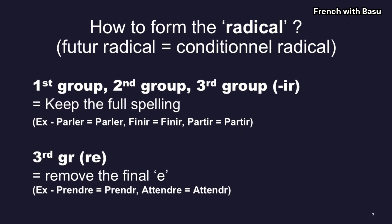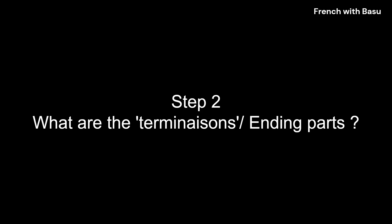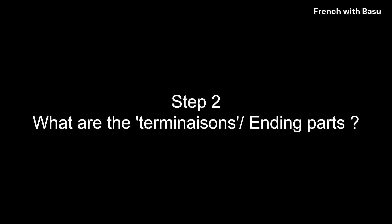Step 2: let's learn the terminaison, or ending parts, of le conditionnel présent. These are exactly the same as l'imparfait endings: -ais, -ais, -ait, -ait, -ions, -iez, -aient. You can use these terminaisons for all three groups of verbs without exception.